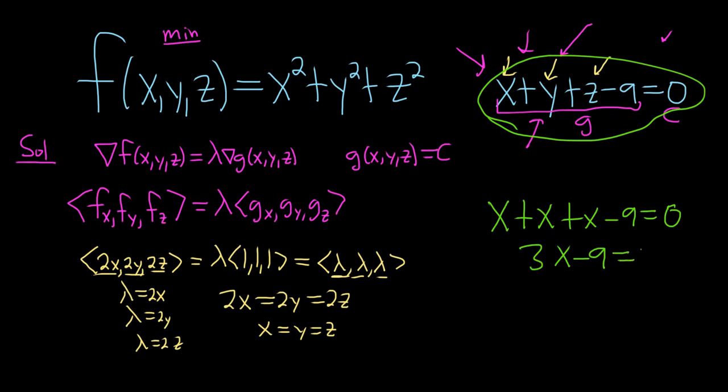Add the 9, so 3x equals 9, then divide by 3, so we get x equals 3. Now that we have x, well we know they're all the same, so that means that y is also equal to 3 and z is also equal to 3.